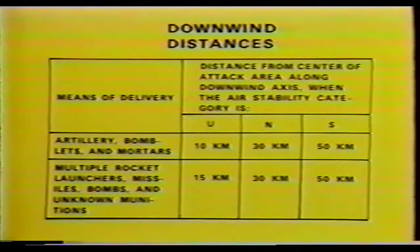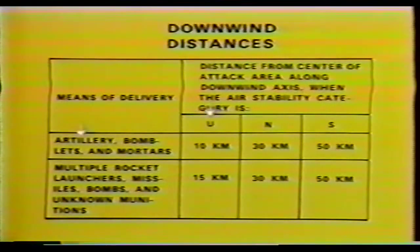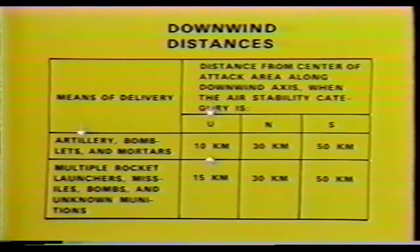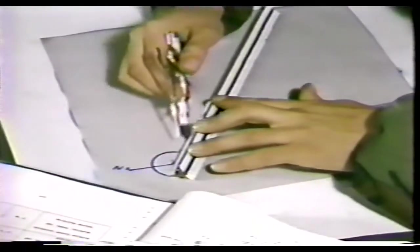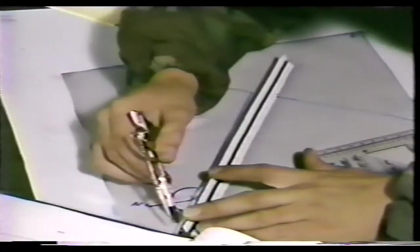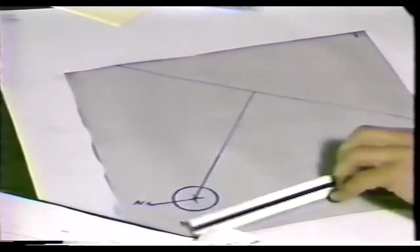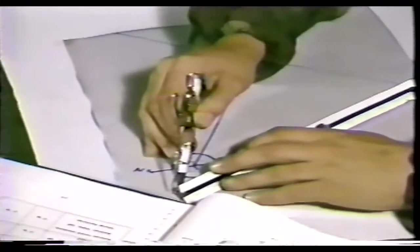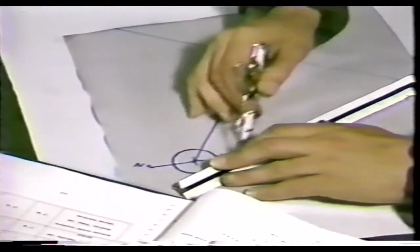The attack was ground-bursting artillery munitions and the air is unstable. Using the chart, the NCO determines that the distance from the center of the attack area along the downwind axis will be 10 kilometers. He plots the maximum downwind distance of 10 kilometers, then draws a line perpendicular to the downwind direction. He then extends the downwind direction line upwind two kilometers from the attack center and draws two lines that just touch the attack area circle and extends them until they intersect the maximum downwind distance line.